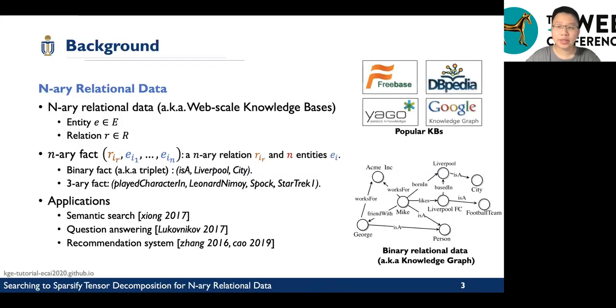First, background. What is n-ary relational data? N-ary relational data, also known as web-scale knowledge bases, contains a set of entities and relations. Generally, it's composed of n-ary relations and entities. For example, the binary fact, also known as triplet, is Liverpool city.